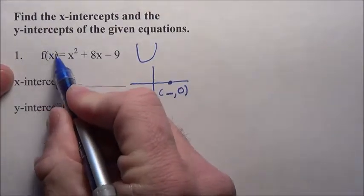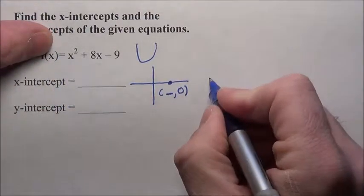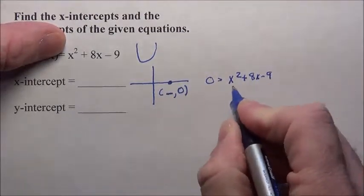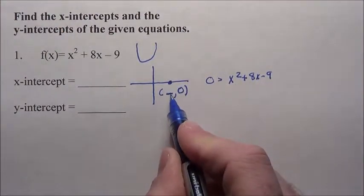In this equation, that means we're going to set this equal to zero. So we have 0 = x² + 8x - 9. I've got to solve this for x and figure out what that value is right there.